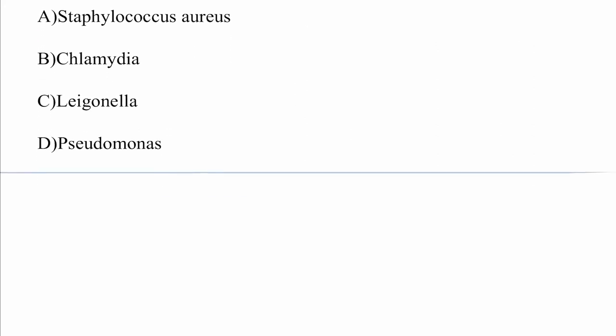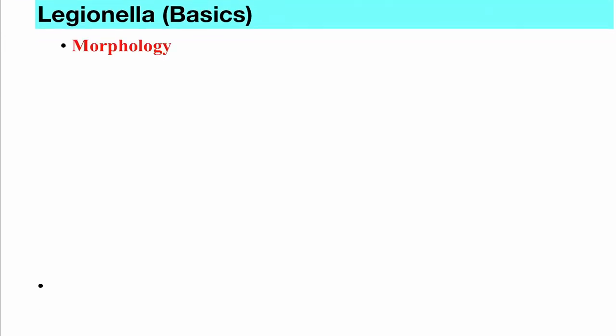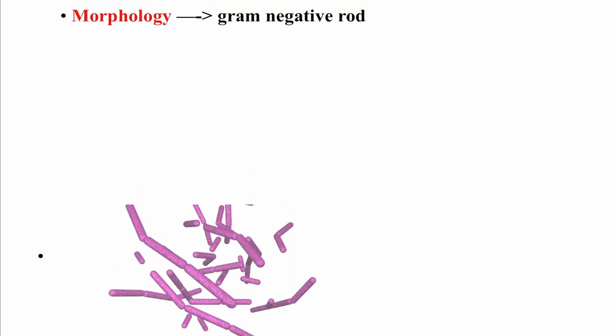First, a very basic idea of Legionella — not going into detail. Legionella is a gram-negative rod. You can see in the picture the pinkish-red color indicating gram-negative, and it's rod-shaped — gram-negative bacilli. Two diseases are caused by Legionella, which we will discuss today.